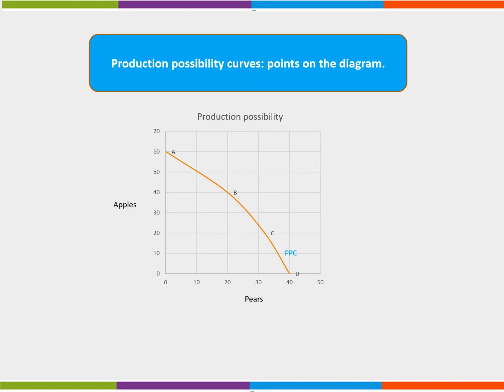All factors of production are being used and there is no unemployment of economic resources. Producing anywhere within the PPC shows under-use of resources, for example at point E. More resources could be used if there is an increase in efficiency. At point E we could produce more of both apples and pears without affecting the current output of these products. This shows an inefficiency as not all resources are being used.